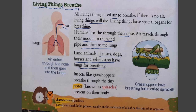Insects like the grasshopper breathe through tiny pores known as spiracles present on their body. We can see a grasshopper has breathing holes called spiracles, whereas humans have a nose for breathing and air goes through the windpipe to the lungs. Living things breathe whereas non-living things do not breathe.